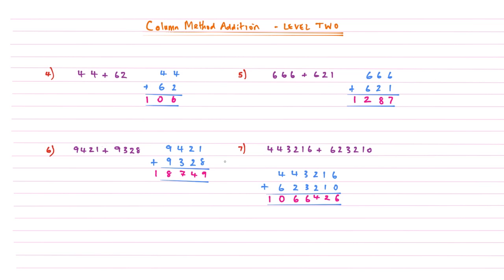To summarize Level 2: the thing that is different is that the last column gives us a number that is 10 or above. We looked at how to write that number down — we simply write it underneath an invisible column to the left.